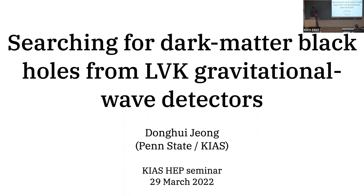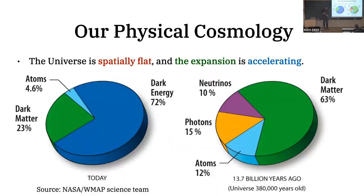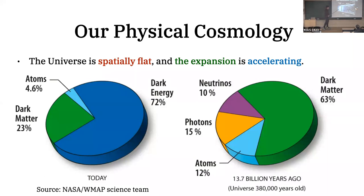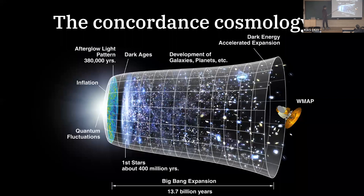This is basically a cosmology talk, so I should start from this slide. This is a pie chart of our fundamental cosmological parameters as of now, and this is the pie chart 13.7 billion years ago when the CMB was first released. Each one of these numbers is a primary observable from the CMB, so we know more about the universe at that early time than we do now.